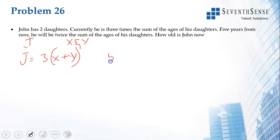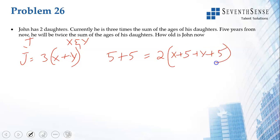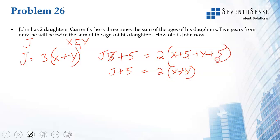Five years from now, everyone will be five years older. He will be twice the sum of the ages of his daughters. So we write: j + 5 = 2 times (x + 5 + y + 5), which simplifies to j + 5 = 2(x + y) + 20.